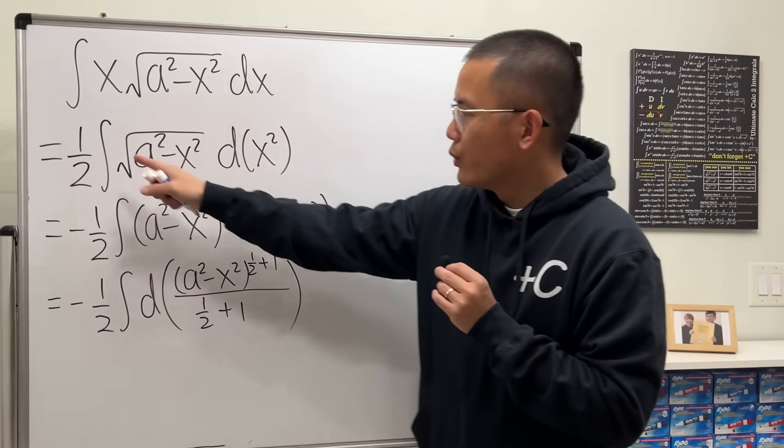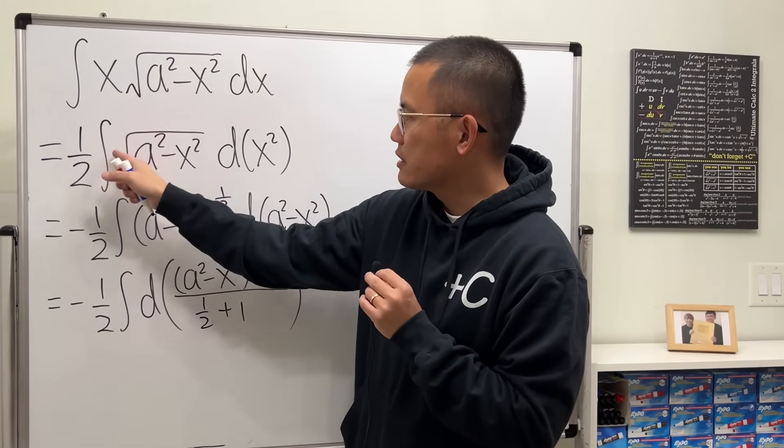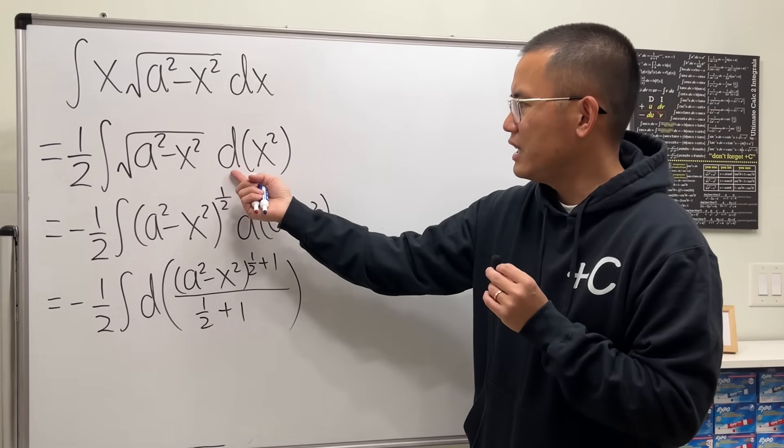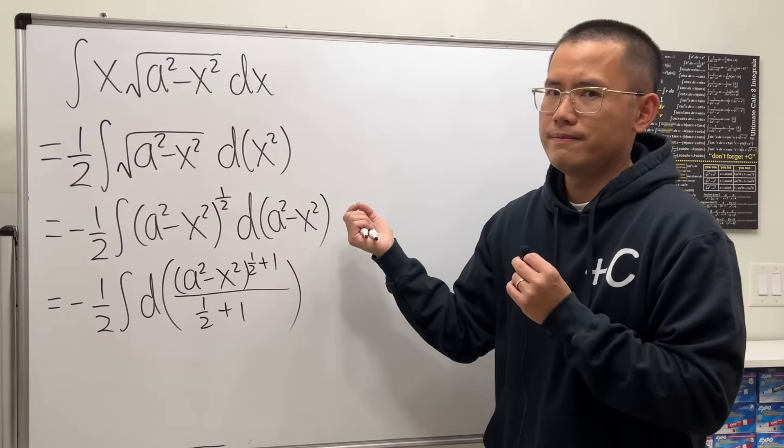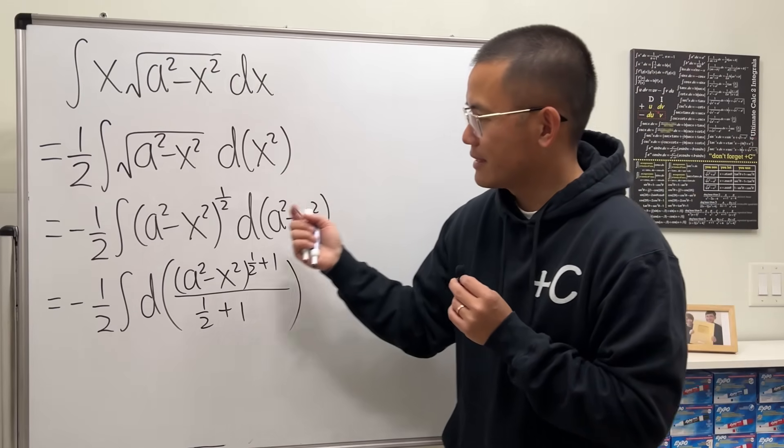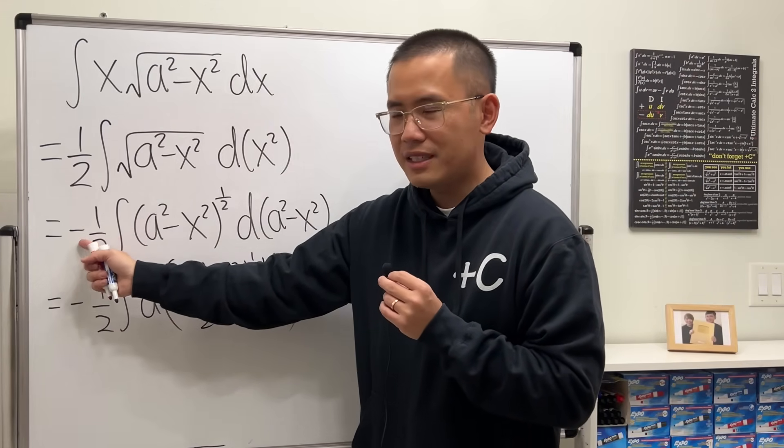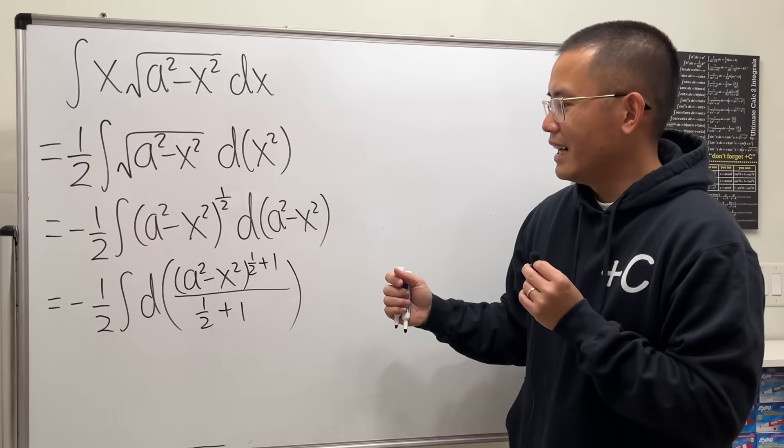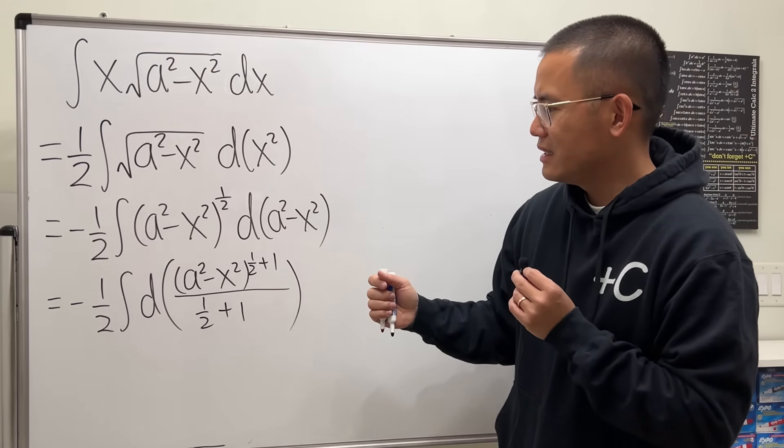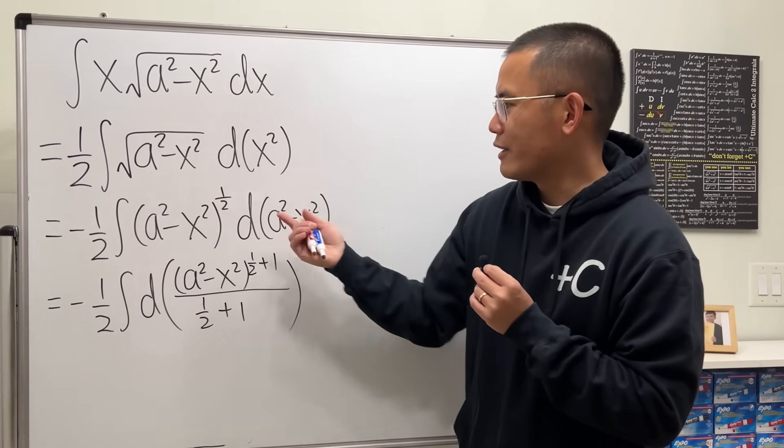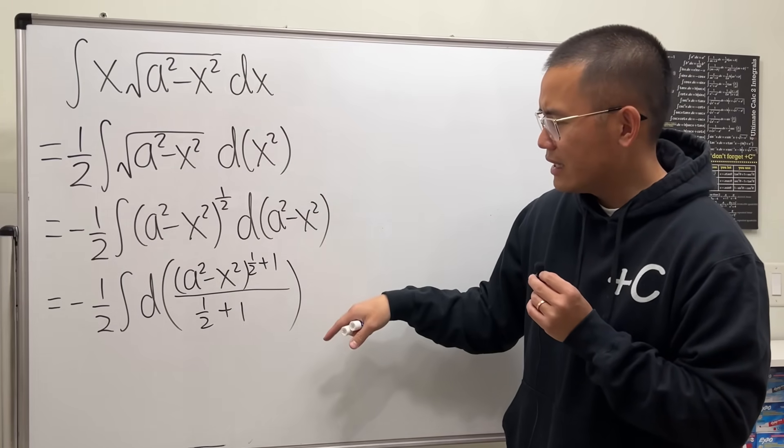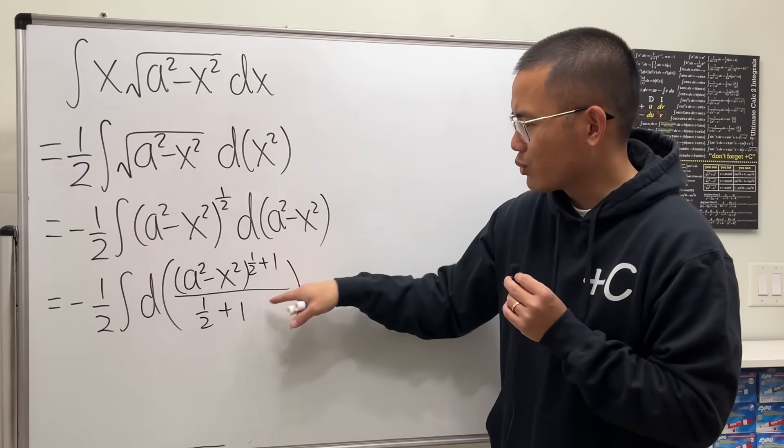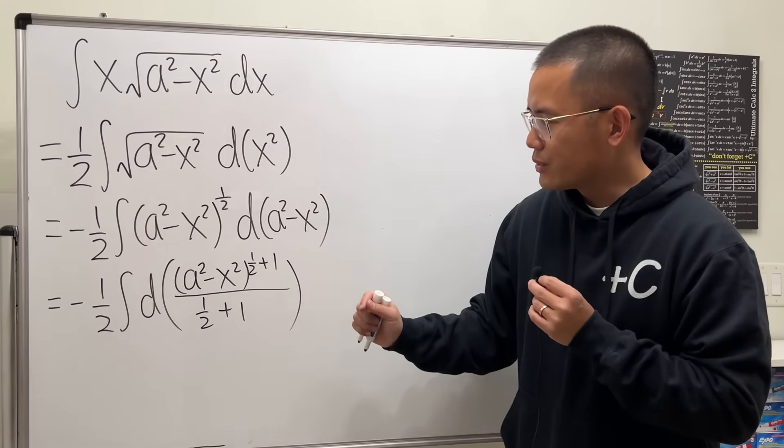For the first line, we have the 1 half and the x is gone, and right here we have d parentheses x squared. Next, we have this negative, and then here we have a squared minus. And then lastly, the square root is the 1 half power. And then they have the 1 half plus 1 divided by the 1 half plus 1. So why exactly is going on?